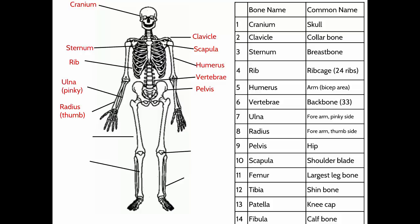In the legs we again have one bone on top and two bones on the bottom. The top bone is the femur — the largest bone in the body. The two bones in the lower leg are the tibia and the fibula — they do not rhyme; people always want to say 'tibia and fibia' but it's tibia and fibula. The tibia is the front one, your shin bone, whereas the fibula is the thinner bone more towards the back.